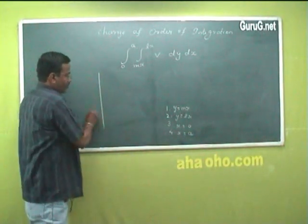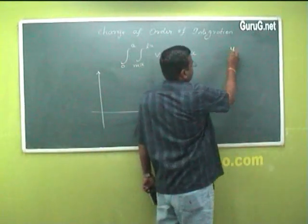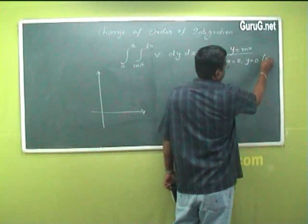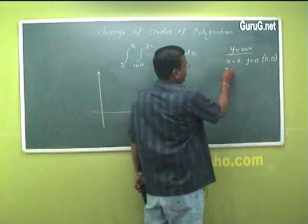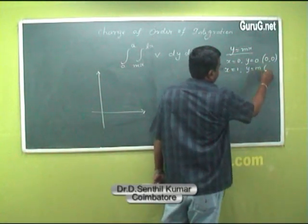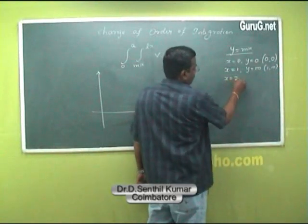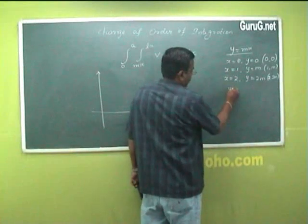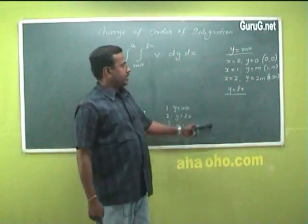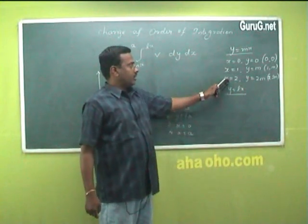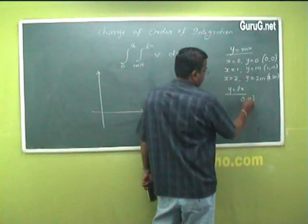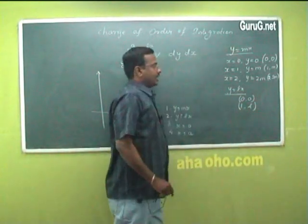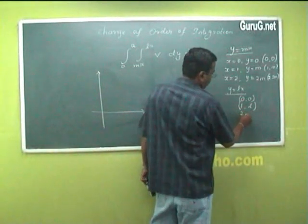Now I am going to draw the line y = mx. When x = 0, y = 0. When x = 1, y = m, giving point (1, m). When x = 2, y = 2m, giving point (2, 2m). Similarly, for the line y = lx, when x = 0 the point is (0, 0), and when x = 2 the point is (2, 2l). Here l and m are any two different constants.